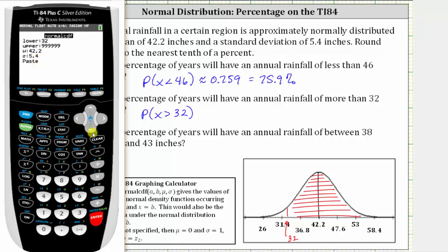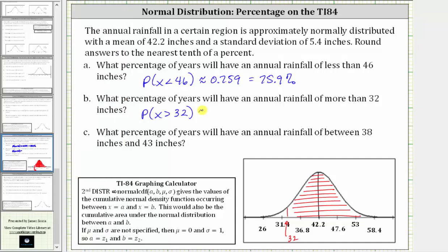Mu and sigma stay the same, so we go down to paste, press enter, and enter again. To three decimal places, we have approximately 0.971, which is 97.1%.